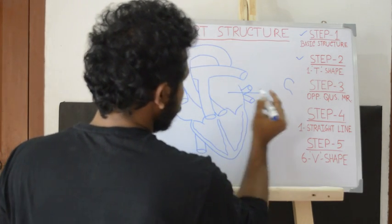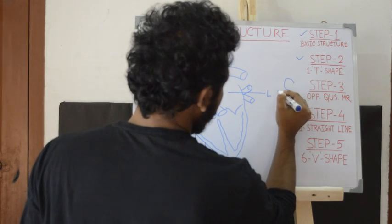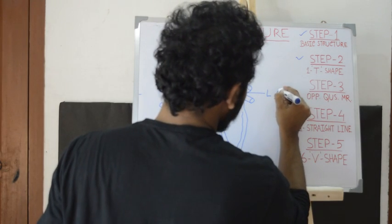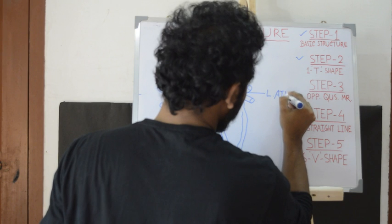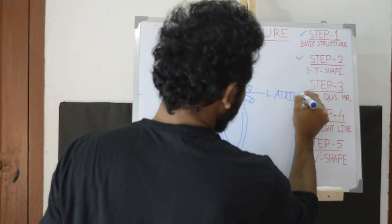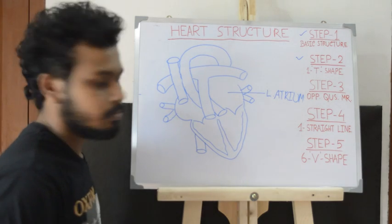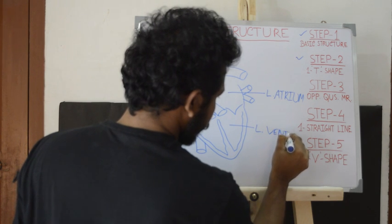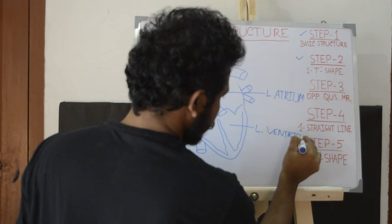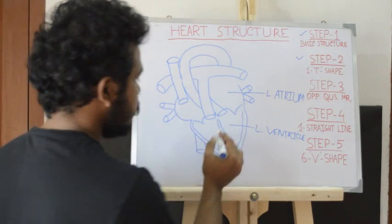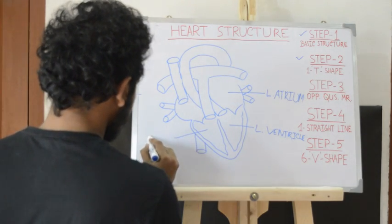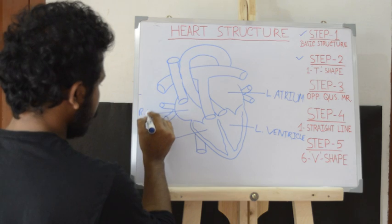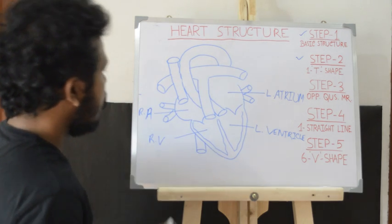Now I will show you how to label this heart structure. This is the left atrium. This is the left ventricle structure, this is the right ventricle structure, and this is the right atrium structure.